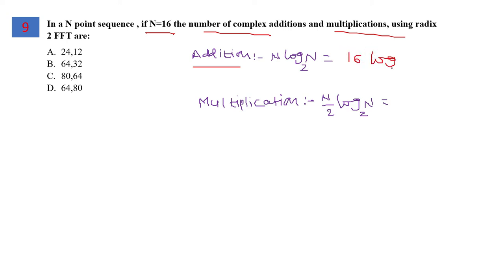With N equals 16, this becomes 16 log₂(2⁴), which equals 64. For complex multiplications, it's (1/2)N log₂(N), which equals 32. For question 9, option B is the correct answer.